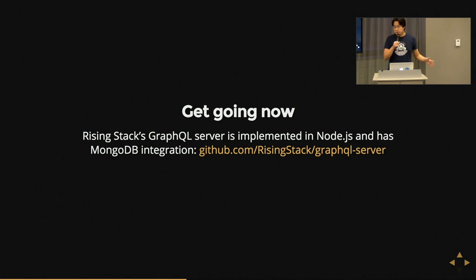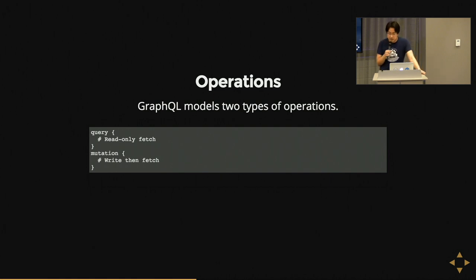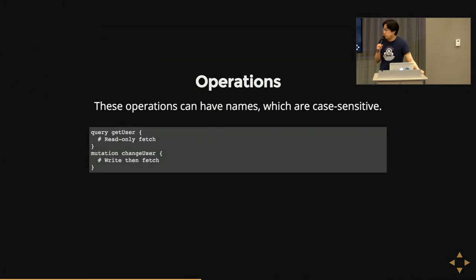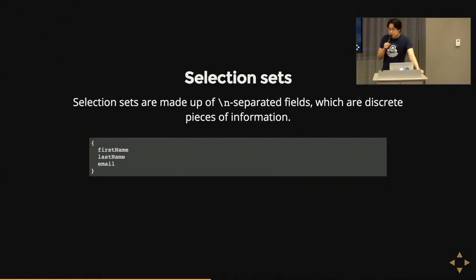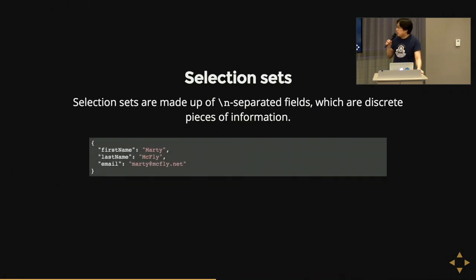Let's talk a little about syntax. GraphQL models two types of operations. A query is a read-only fetch — you're not affecting anything when you do a read. A mutation is a write operation that performs a write, and nested within that write is a further fetch. You can have named operations, which are case-sensitive, and also anonymous queries. Originally designed with comma-separation, now the spec uses carriage-return separated fields. As you can see on screen, what you get back as JSON mirrors what you queried.